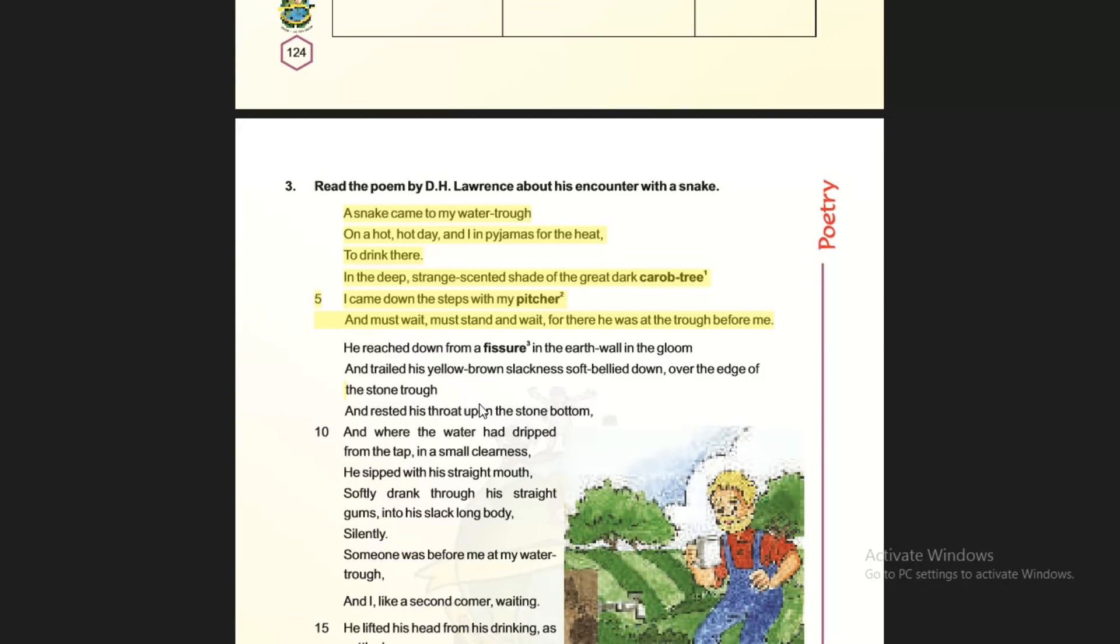The shade is very dark. There is a smell that comes from the carob tree, which is a type of red flower tree. There is a good smell from there, and the snake comes from there.